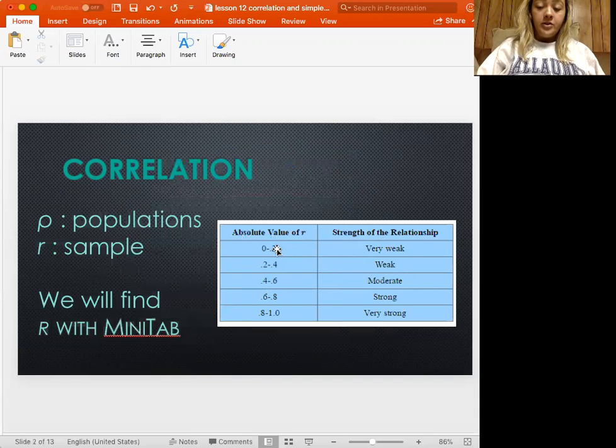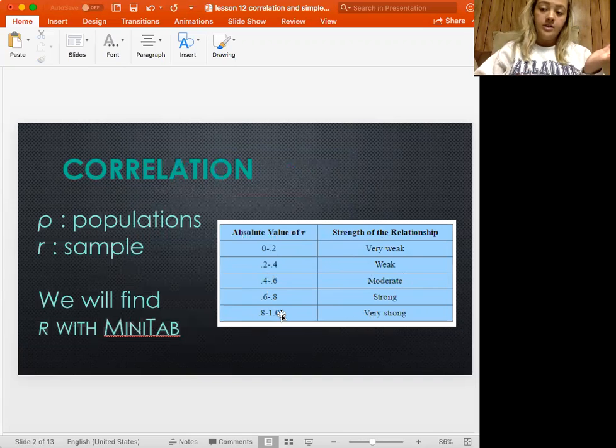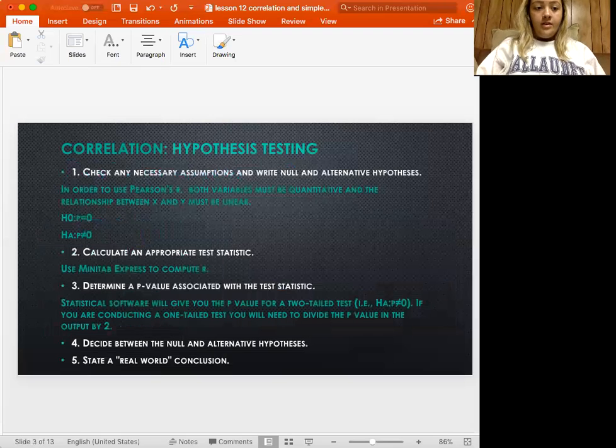So the closer you are to 0, the weaker. The farther away from 0 you are, the stronger it is, which can be farther away in terms of positive 1 or negative 1. That's why we have absolute value here.